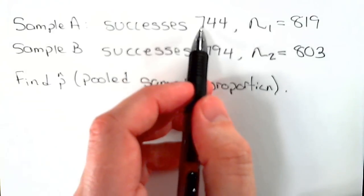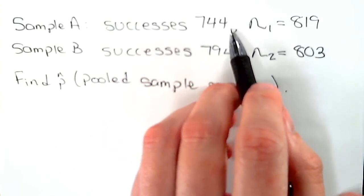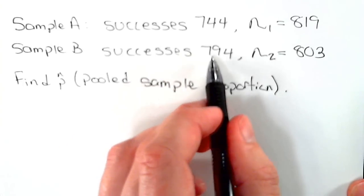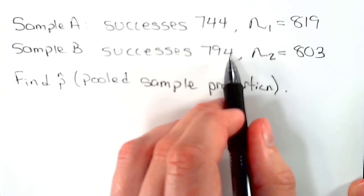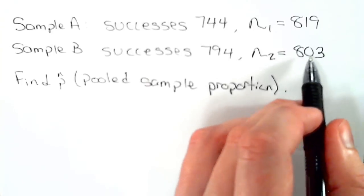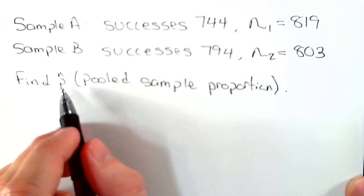We've got two different samples. There's 744 successes in the first sample out of a sample size of 819. There are 794 successes in the second sample out of a total sample size of 803. We're asked to find the p hat for the two samples.